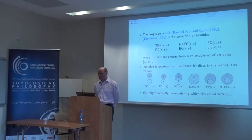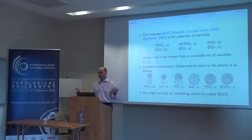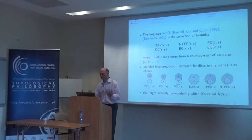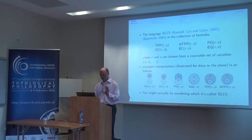It does not touch the boundary. You may be wondering why it is called RCC8 and not RCC6, since there are six primitive predicates, and the answer is that two of them are asymmetric, and if you take the converses, you get eight. So we have a language here for talking about the relationship between regions. The idea is that we want to describe configurations — spatial configurations in purely qualitative terms — and then reason with it. We want to perform logical deductions, tell whether specifications are realisable, and so on.